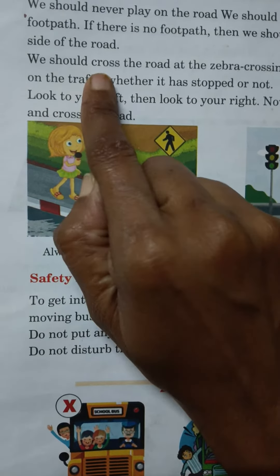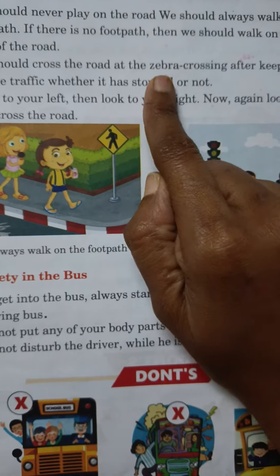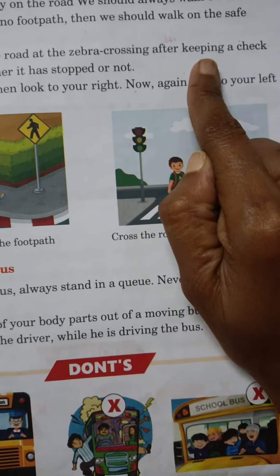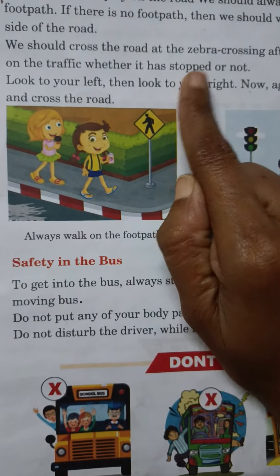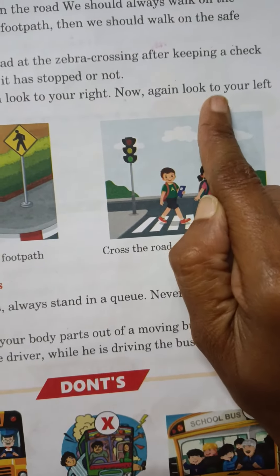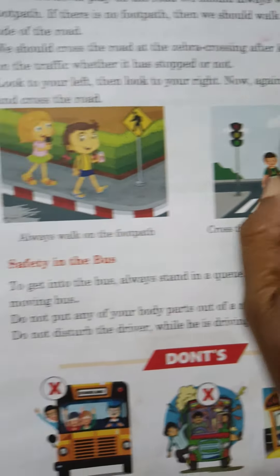We should cross the road at the zebra crossing. After keeping a check on the traffic, whether it has stopped or not, look to your left, then look to your right. Now again look to your left, and cross the road.